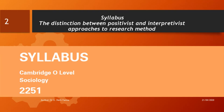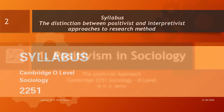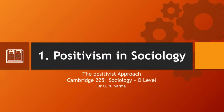Welcome to the Sociology O Level lessons. These lessons will be based on the syllabus Cambridge O Level Sociology 2251. In the first one we look at research methods. The first part covers the distinction between positivist and interpretivist approaches to research methods. In the first lesson we'll consider the positivist approach and in the next lesson we'll look at the interpretivist approach.